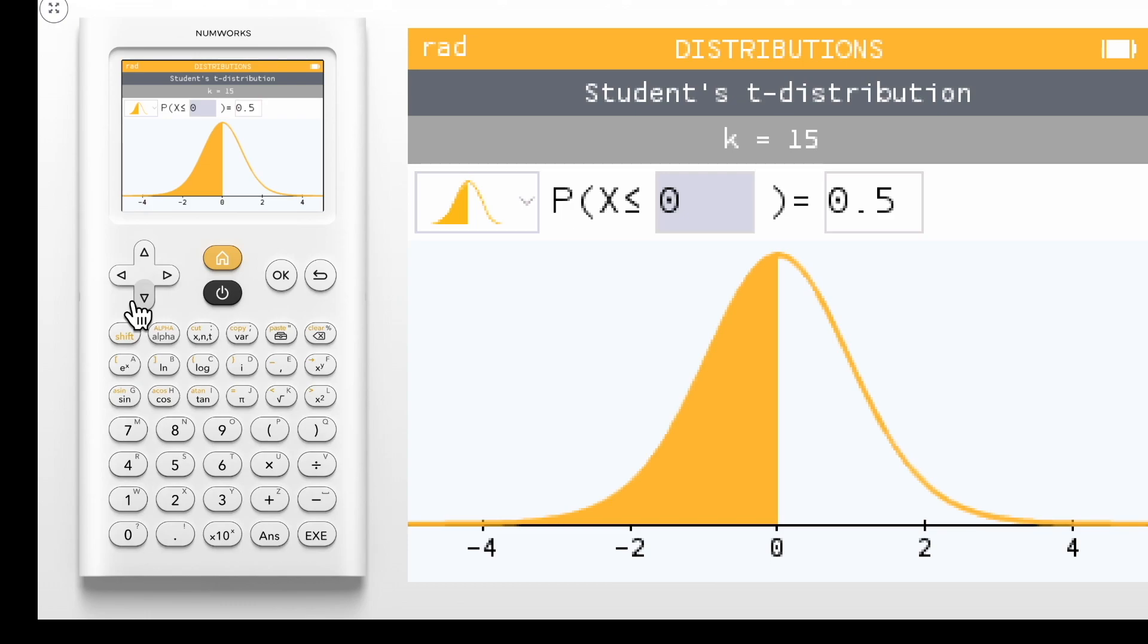On this screen, the top banner is a reminder of your selections and parameters. You can see we're in the distributions app exploring the student's t distribution and k is equal to 15.